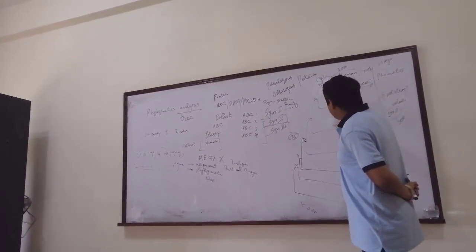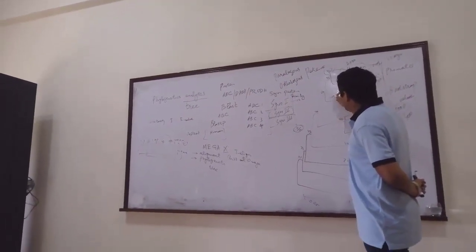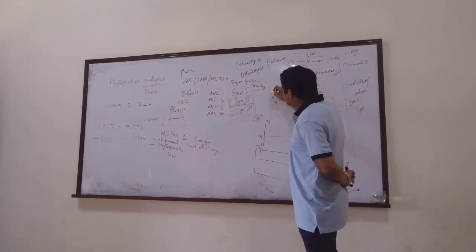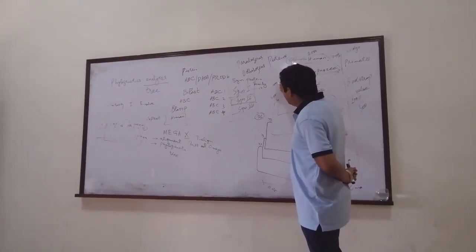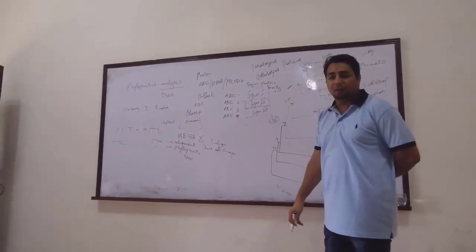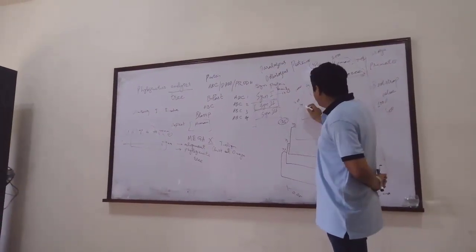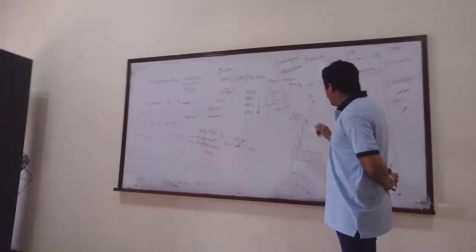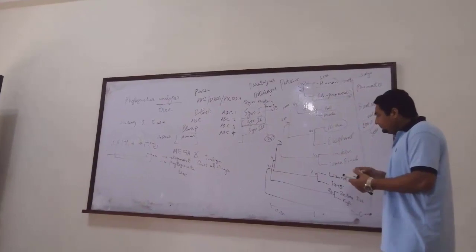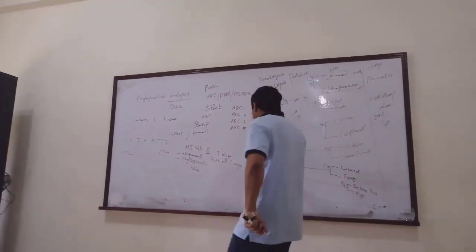Similarly, 99 means 990 times the same sequence appeared. But a value of 40 means only 400 times out of 1000. A value of 43 means same sequence appeared only 430 times out of 1000. So we can have some doubt about those nodes.